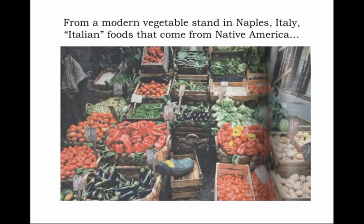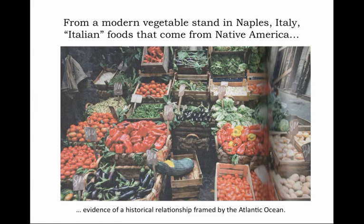From a modern vegetable stand in Naples, Italy, we see Italian foods that history tells us come not from Italy but from Native America, suggesting evidence of a historical relationship between the western and eastern hemispheres, between the Americas and Europe — a historical relationship framed by the Atlantic Ocean.